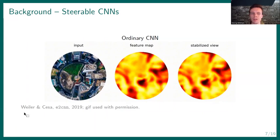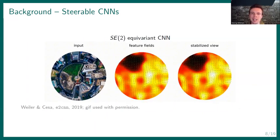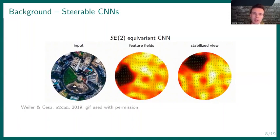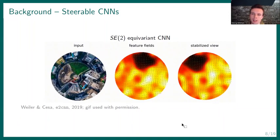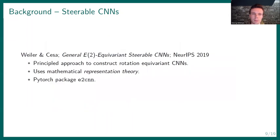But if we use the framework of Weiler and Cesa from their 2019 NeurIPS paper, then we can construct what's called an SE2 equivariant steerable CNN. And that's a CNN that is both translation and rotation equivariant. So that means that when we rotate the input image, then the feature field is exactly rotated as well. And in the stabilized view, you can see this quite well. So up to some numerical issues, the stabilized view is constant. And in this paper by Weiler and Cesa, they give a very principled approach to constructing these rotation equivariant CNNs using the mathematical framework of representation theory, which I won't have time to get into now. And they also give a very nice PyTorch package called E2CNN, which I used to implement SE2-LoFTR.